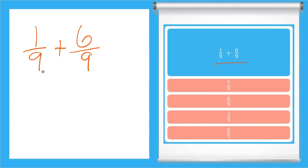It's fairly simple, just like a regular addition problem. You add one plus six, which gives us seven, and we keep the denominator the same—nine. So we have seven-ninths as our final answer.